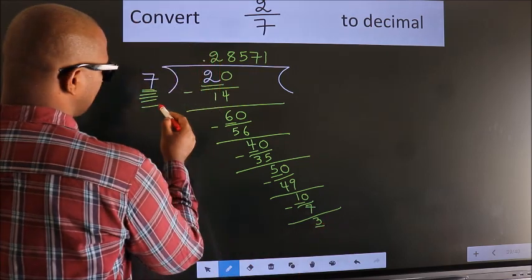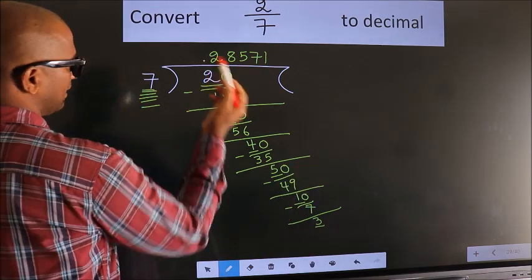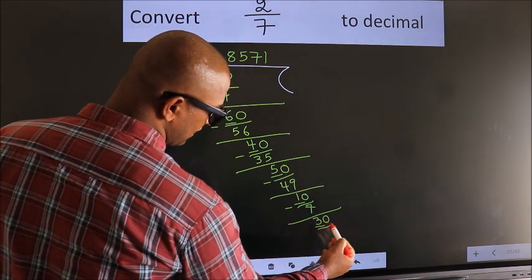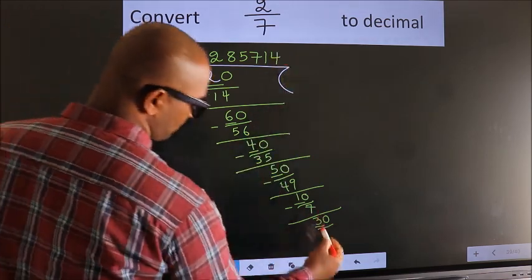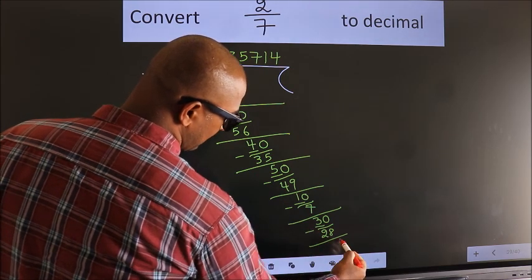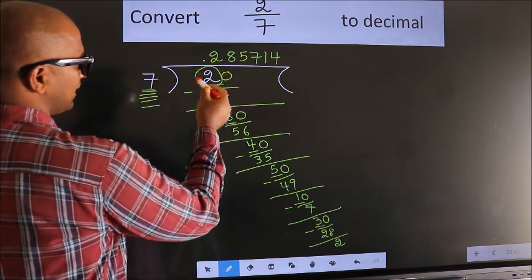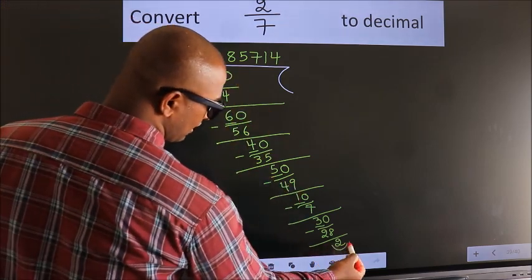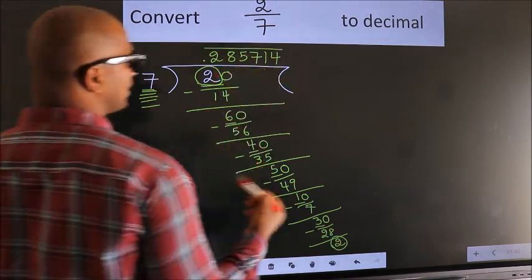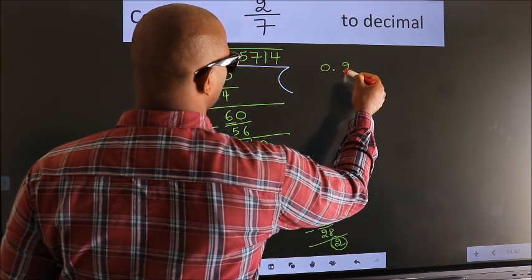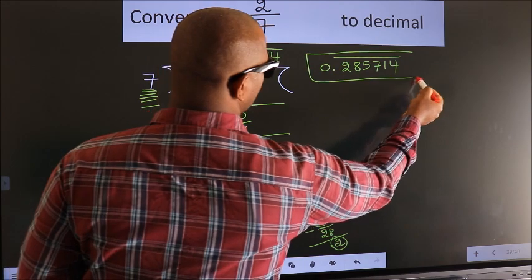Here we have 3, here 7. Now, here you observe — we had 2 here and we got 2 again. That means we get a bar on these numbers. Therefore, our answer is 0.285714 with a bar on these numbers. This is our answer.